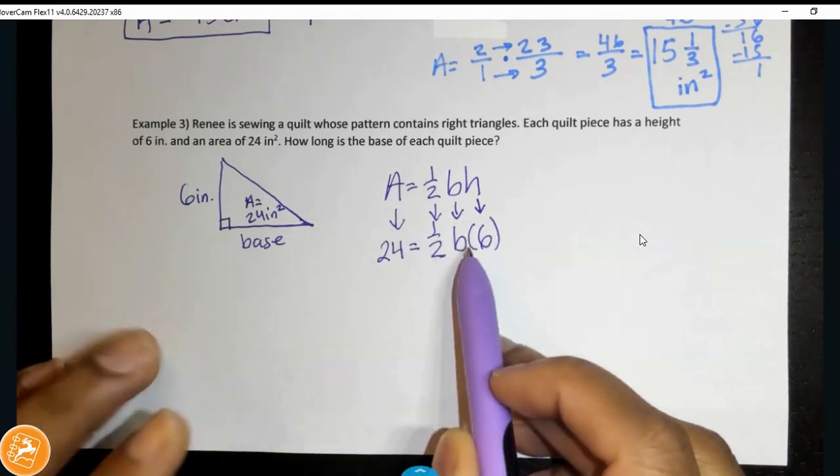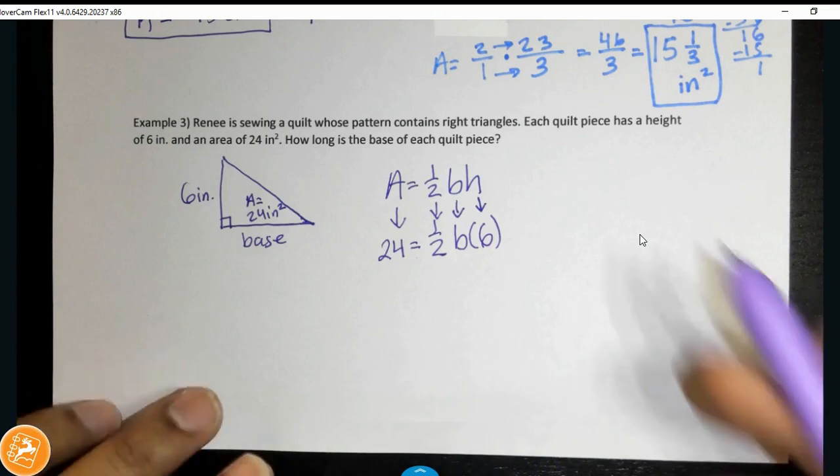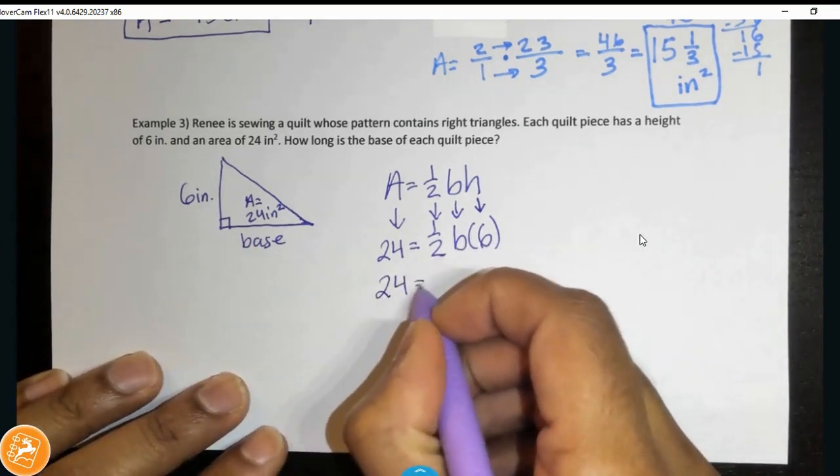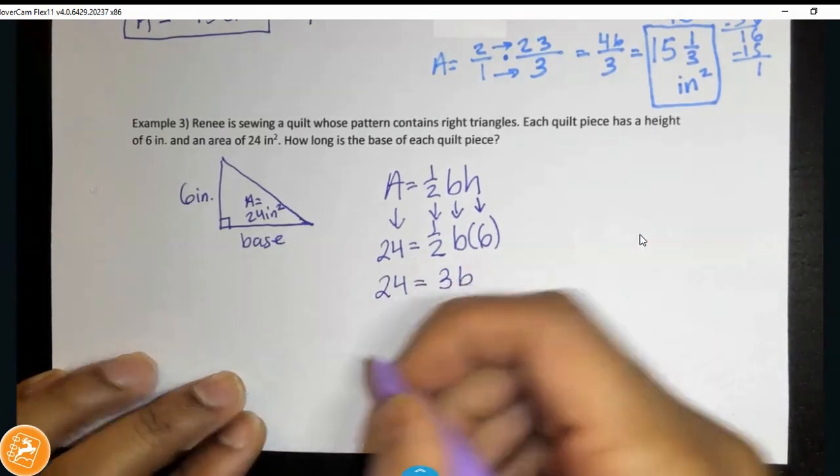So, 24 is equal to one half times the base times 6. Now, remember, I can do this out of order. Commutative property, if you remember our properties, commutative property of multiplication says I can multiply in any order. So, I'm going to multiply one half times 6. Half of 6 will get me 3 times the base is equal to 24.